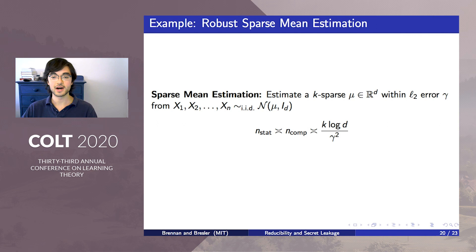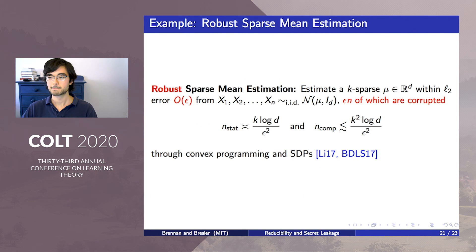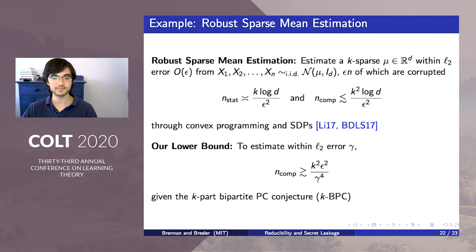If an adversary is allowed to corrupt an epsilon fraction of these samples, then information theoretically the best estimation error you could hope to achieve is O of epsilon. Furthermore, a gap emerges as the best known algorithms now need K squared log D over epsilon squared samples. We show a matching lower bound follows from the k-BPC conjecture. Our reduction also predicts a computational sample complexity for a general estimation error of gamma.